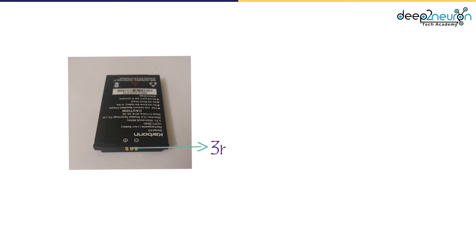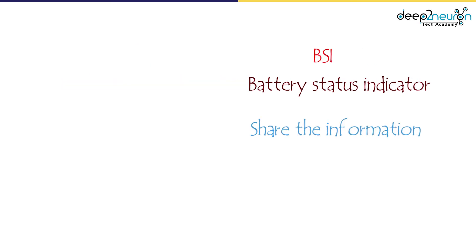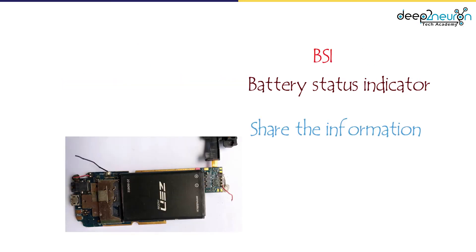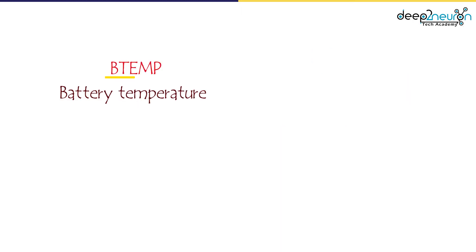The third terminal is the answer to all these questions. Here we need to study two terms: BSI and B-TEMP. BSI stands for Battery Status Indicator. BSI helps to share information between the battery and the mobile phone — for example, if there is a low percentage of charge in the battery, it will send a message through the BSI terminal to the motherboard, which then shows the low battery alert. The battery percentage is also shown based on this method.